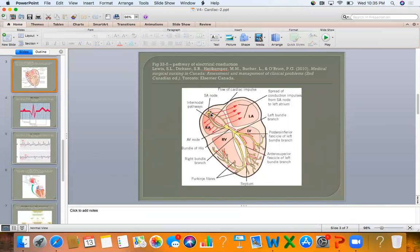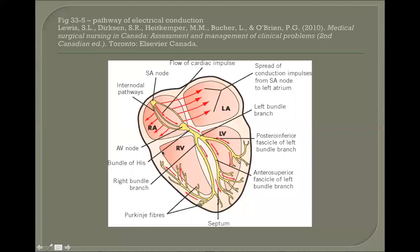The conduction starts at the SA node — that's your pacemaker. The pacemaker moves through the atria, down to the AV node, through the bundle of His, the branches, and up through the ventricles. It's pretty intuitive how the electricity flows, if you think of how a heart contracts.